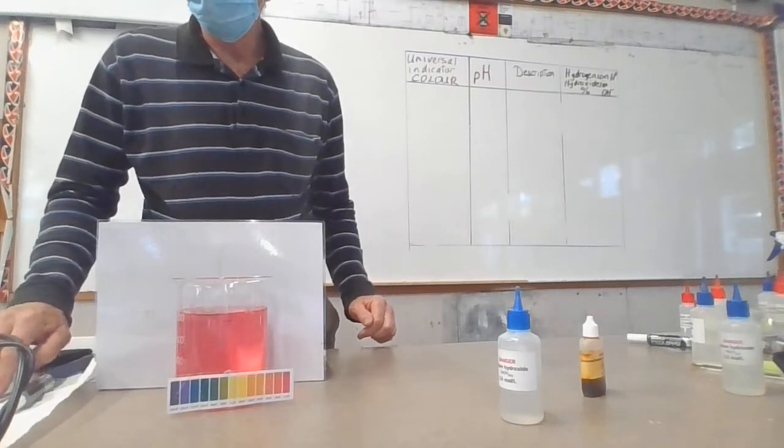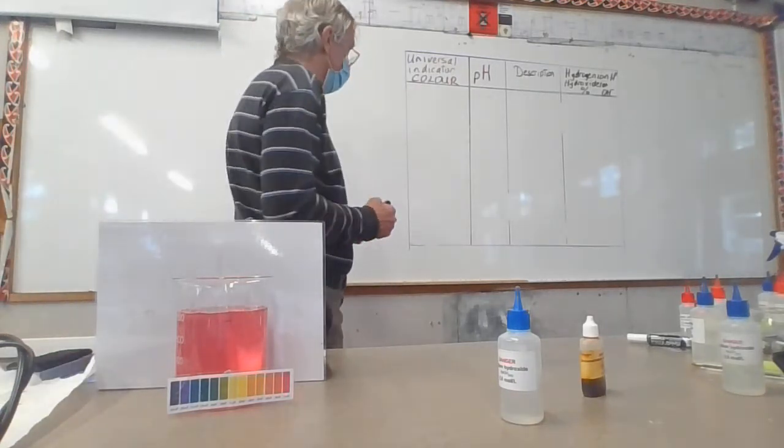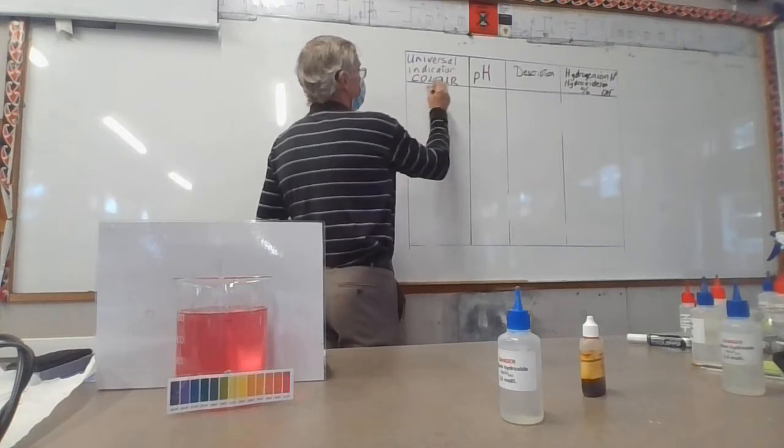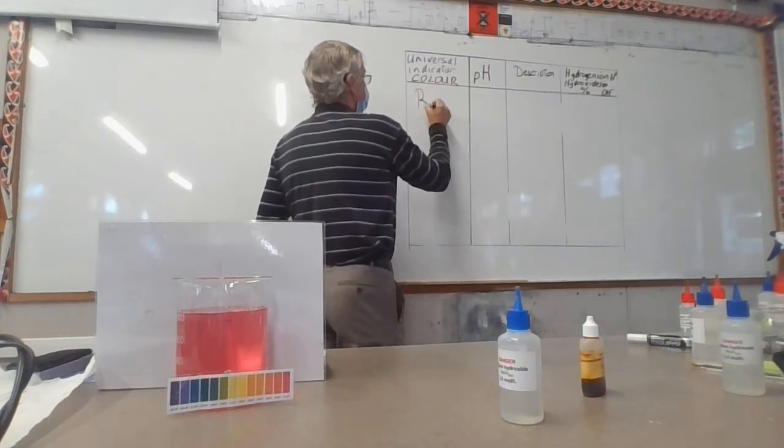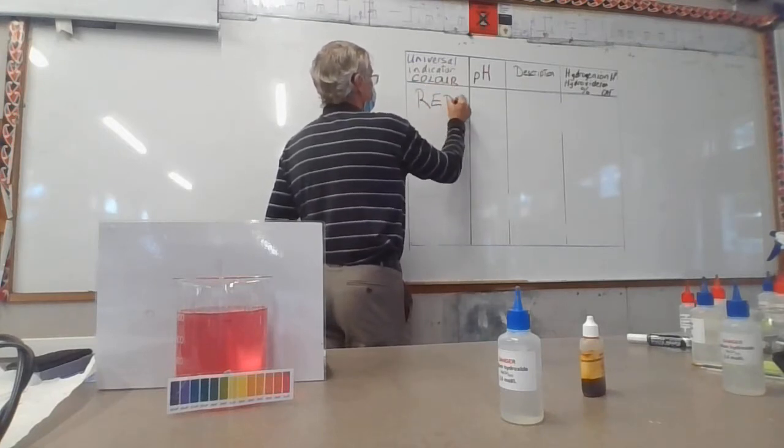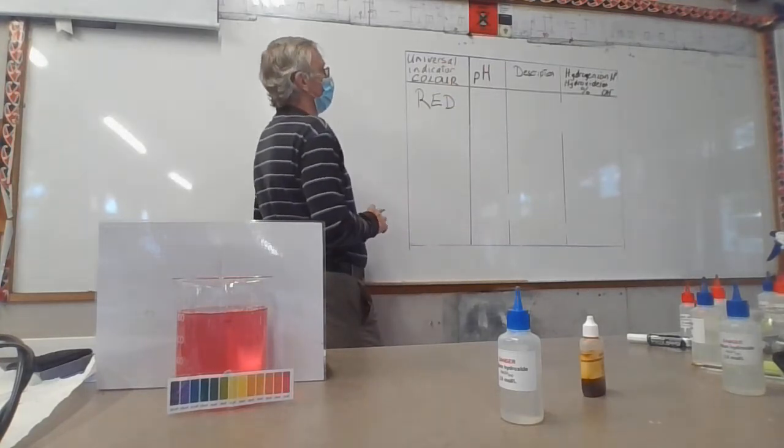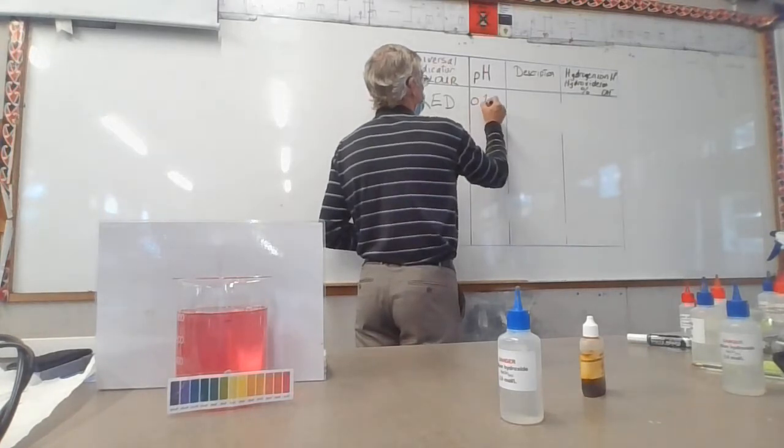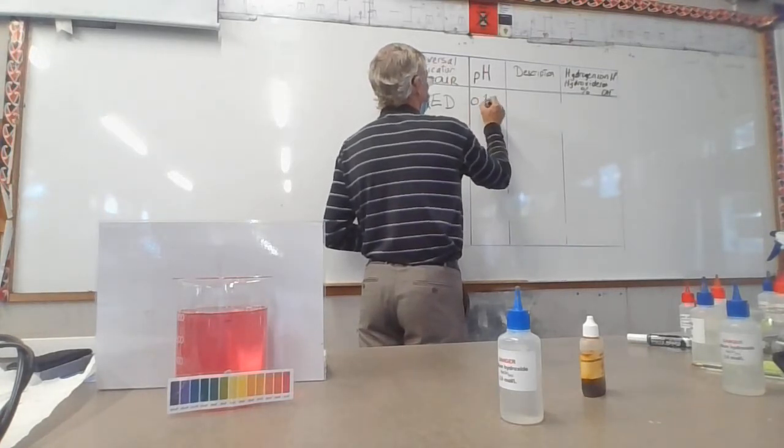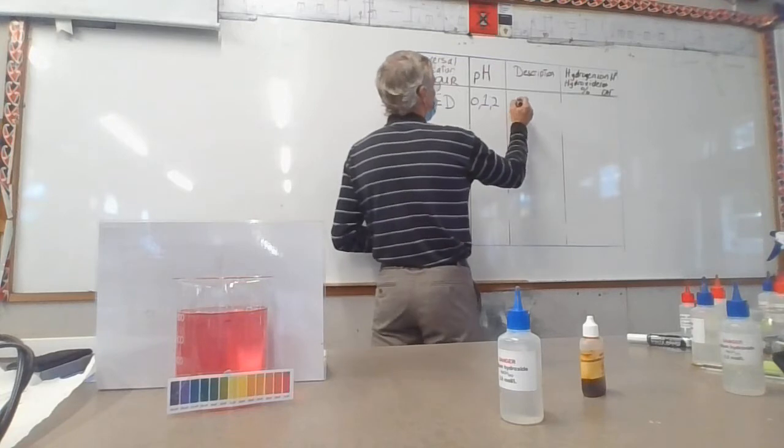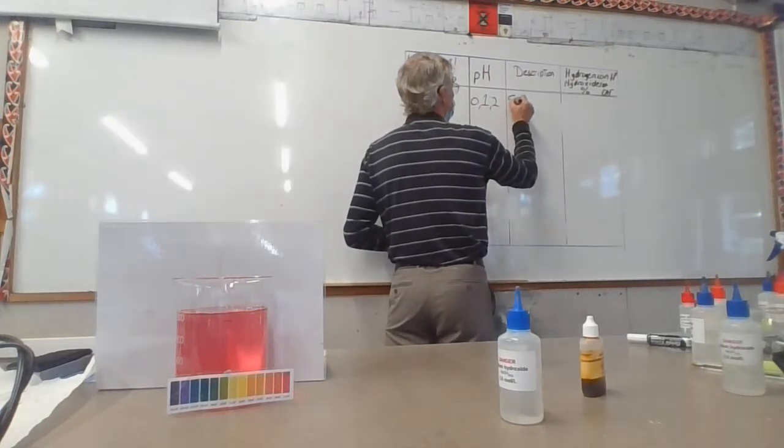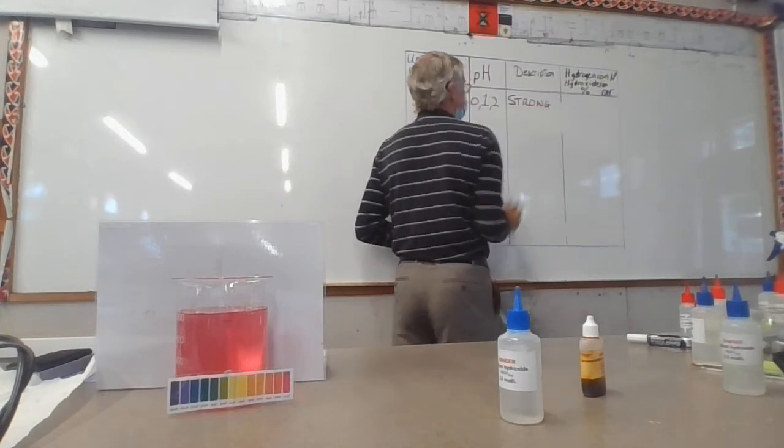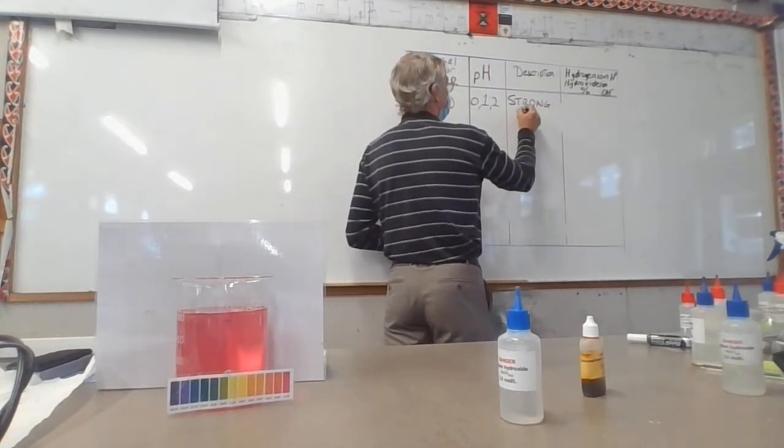That is a strong acid, and your job in questions like this is to link all of these things to explain how universal indicator works. When you get a red color, the pH is going to be 0, 1, or 2. All those pHs show that our solution is a strong acid, so usually we just say a pH of 1 or 0 for strong acid.